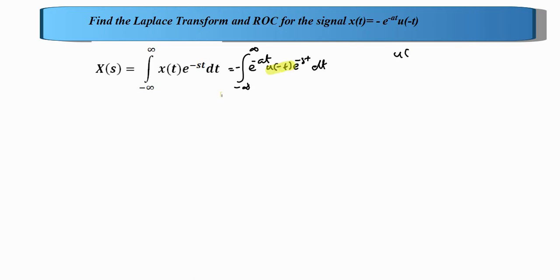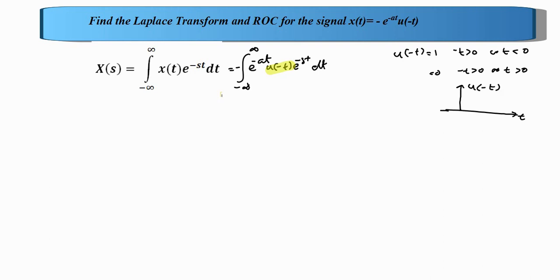We write the definition of u of minus t: u of minus t equals 1 for t less than 0 (since minus t greater than 0 means t less than 0). Graphically, u of minus t has magnitude 1 for t less than 0. Since this signal exists only from minus infinity to 0, we can reduce the integration to minus infinity to 0, grouping the exponential terms as e raised to minus s plus a into t, dt.